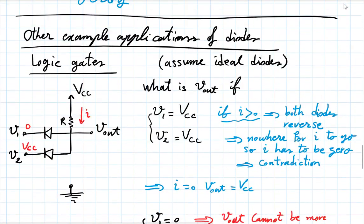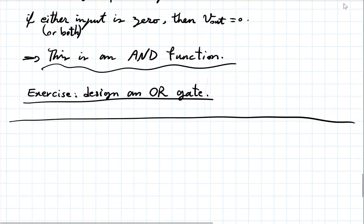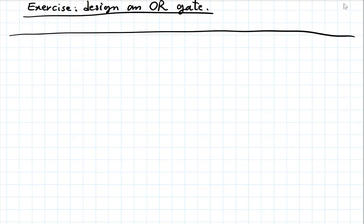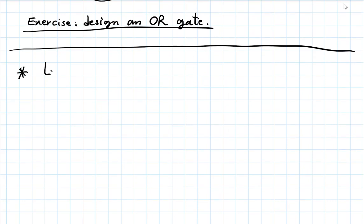Why is it that Vout cannot be greater than 0 when one input is at 0? It's what that diode is imposing. If Vout is greater than 0, you'd have a forward voltage on that diode greater than 0, which is not allowed for an ideal diode. In practice with a real diode it would be around 0.7V, so Vout wouldn't exceed 0.7V. For an ideal diode, any current can go through with zero forward voltage. The diode is effectively putting an upper limit — a clamping action — on the output.